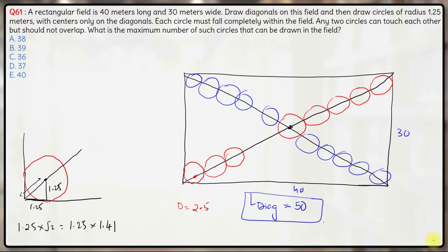Of the total length of the diagonal available for circles, the circle will not lie on the part closest to each corner. This corner segment of the diagonal is 1.25 × 1.41 ≈ 1.76 meters, of which the circle only occupies 1.25 meters from its center. So the green region — the unusable gap at each corner — is 1.76 − 1.25 ≈ 0.51 meters. This 0.51-meter gap exists at both ends of the diagonal.